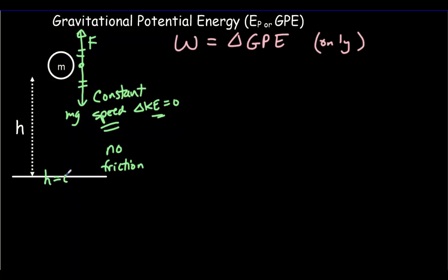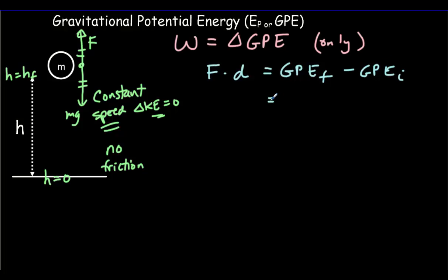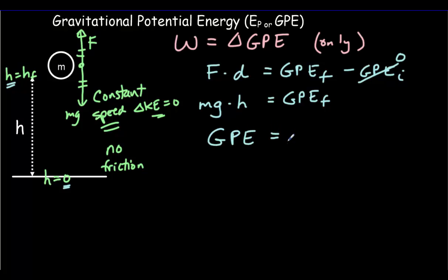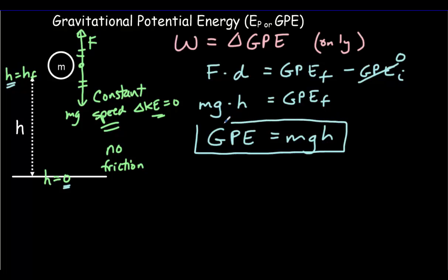Let's assume height is zero on the ground. Work is force times distance. The force equals the weight Mg, and we lift through a height h. The change in GPE is the final value minus the initial value, and with our initial GPE taken as zero, we end up with the expression: gravitational potential energy equals M times g times the height of the object above the ground.